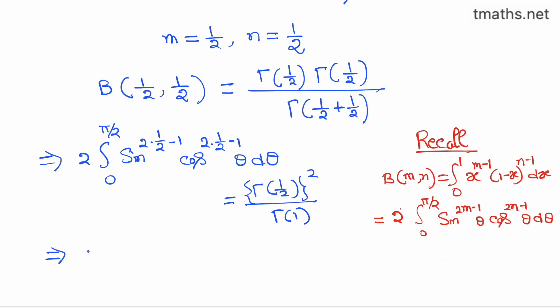we have 2 times integration from 0 to π/2, d theta, is equal to gamma of 1 is equal to 1, so the right hand side will be equal to gamma of half whole square, as gamma of 1 is equal to 1.